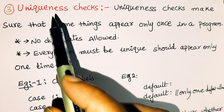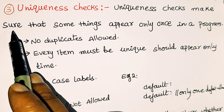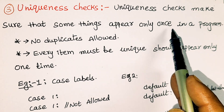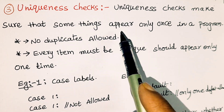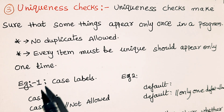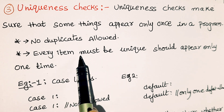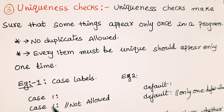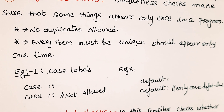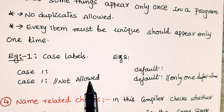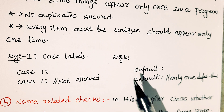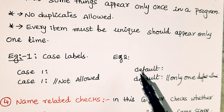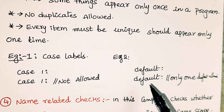The third static check is the uniqueness check. This ensures that the same thing appears only once in a program — no duplicates allowed. For example, in a switch statement, you cannot have two 'case 1' labels, and you cannot write two 'default' labels. These errors are caught at compile time.